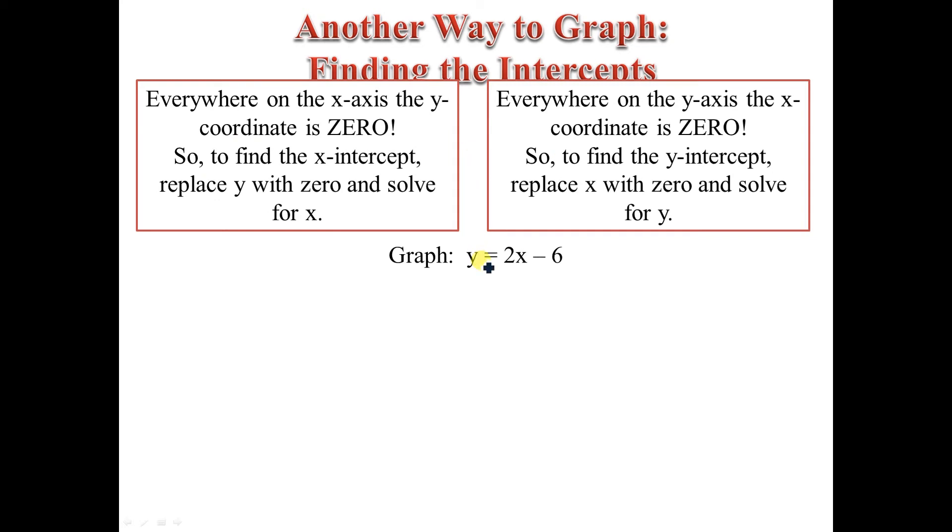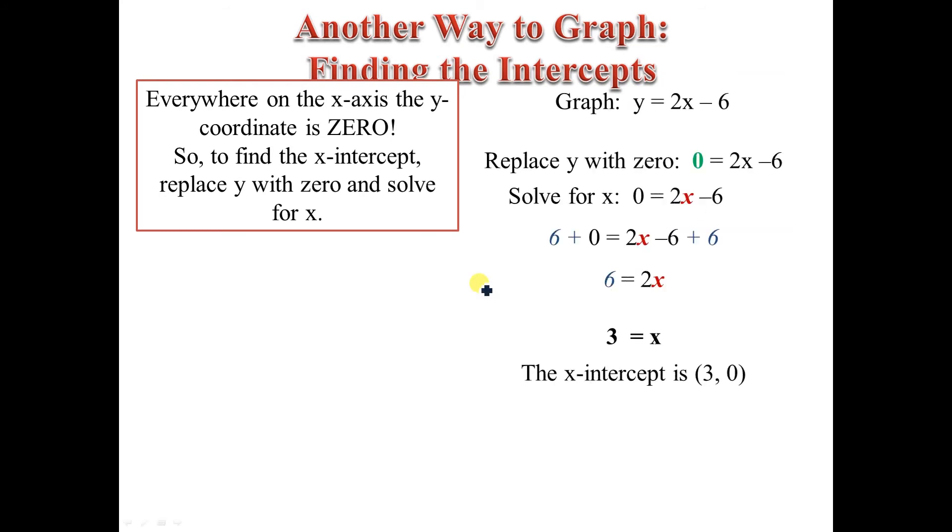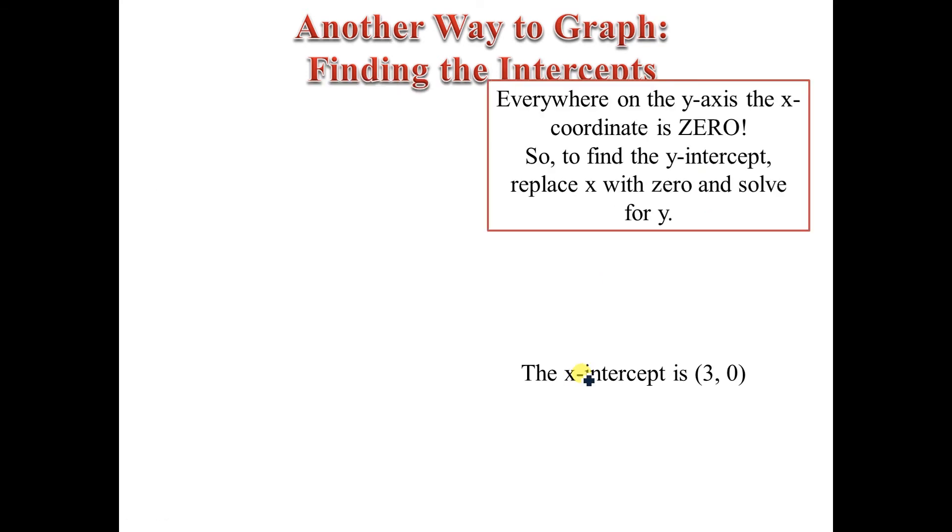Let's go ahead and graph y equals 2x minus 6 by finding the intercepts. So, we're going to find the x-intercept first, and so to do that, we replace y with 0, and then we solve for x. It takes some inverse operations, but not a big deal. And we can see that the x-intercept is 3. Now, let's do the same thing for the y-intercept, and this one's really easy because it's in what's called slope-intercept form, which we will learn about in a minute.